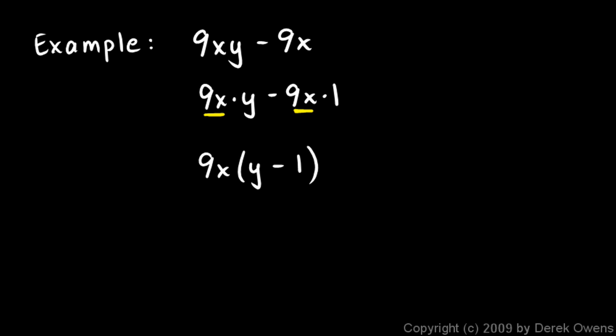And if you write it like that, you can see the y remains here after we take the 9x out, and the 1 remains here after we take the 9x out. And you can check this mentally. 9x times y gives you 9xy. We have a minus sign. 9x times 1 gives you the 9x right there.